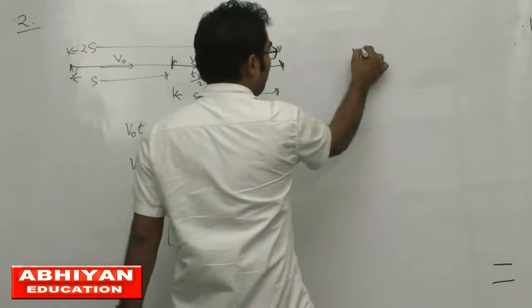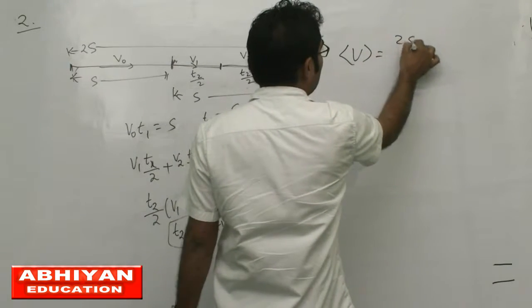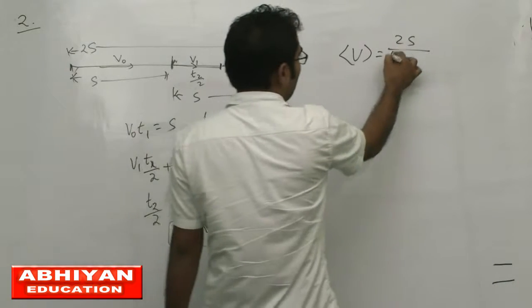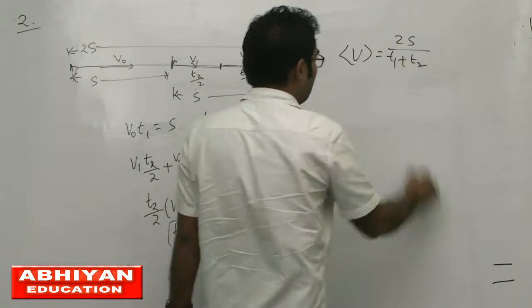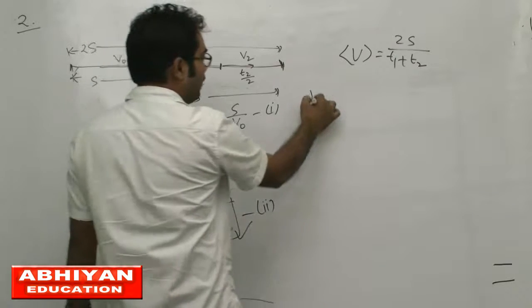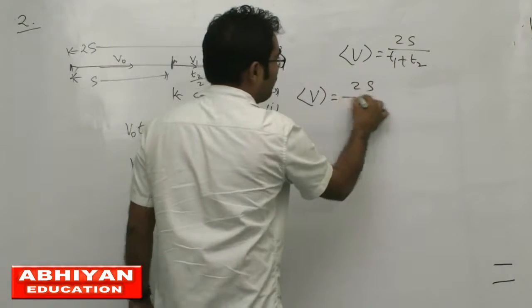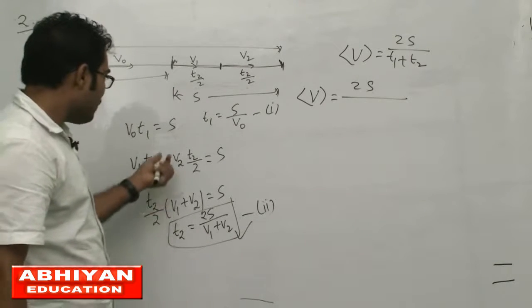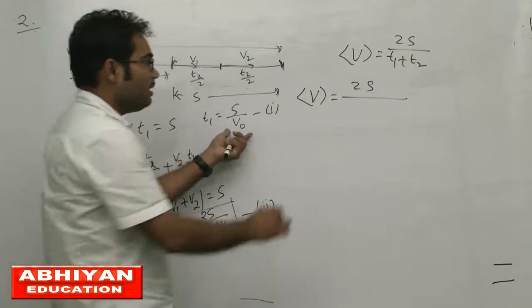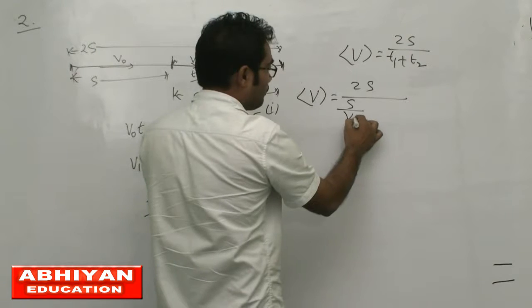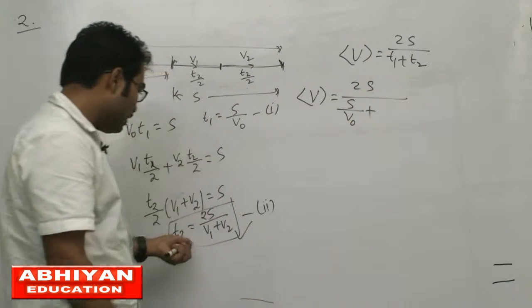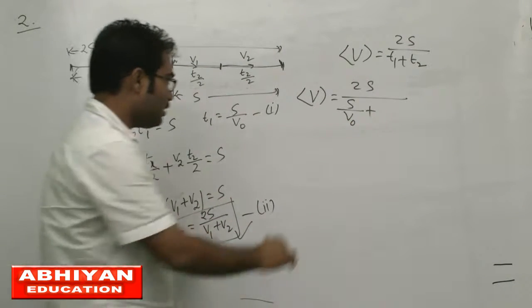Average velocity will be total displacement 2s divided by total time t1 plus t2. So average velocity equals 2s divided by, t1 value is s by v0, plus t2 value is 2s by v1 plus v2.